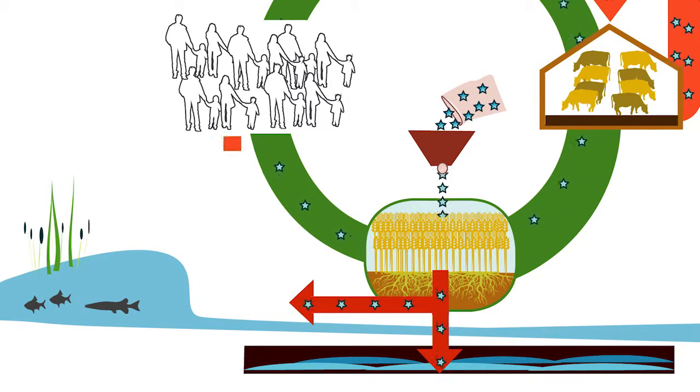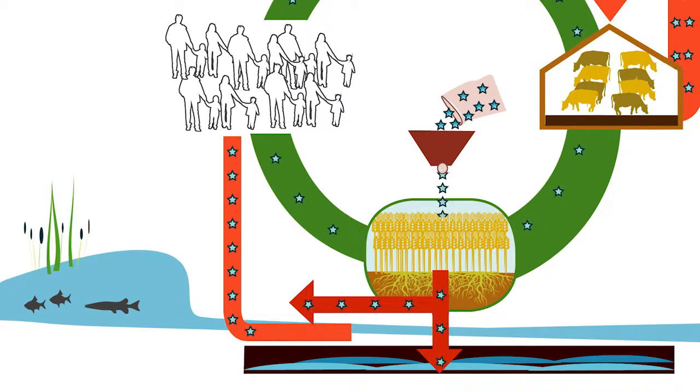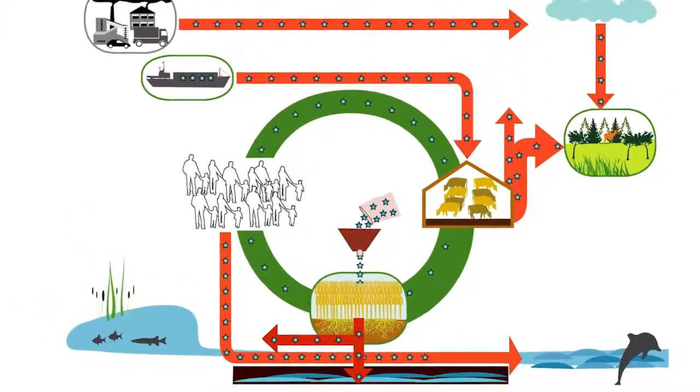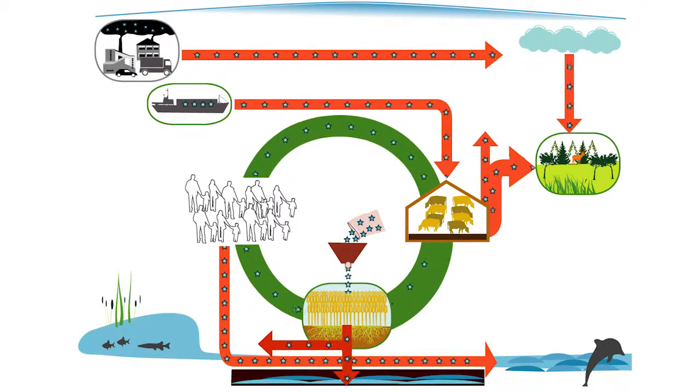Human excrement also enters the rivers and eventually reaches the sea, where it over-fertilizes the ecosystem and damages it.